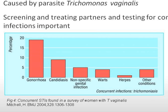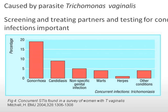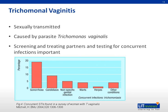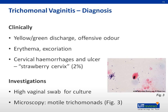The graph shows the concurrent STIs found in a survey of women with Trichomonas infection. Clinical diagnosis is typically identified by a yellow-green foul-smelling discharge associated with vulvovaginal erythema and excoriation, with a strawberry cervix present in 2% of patients. Investigations will reveal a raised pH with motile Trichomonas seen on microscopy.